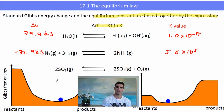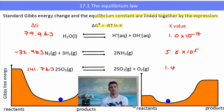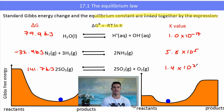For sulfur trioxide decomposing to sulfur dioxide, the delta G value is +141 kJ, so we expect a really, really small K value — and in fact it is 1.4 × 10⁻²⁵, a very small K value.